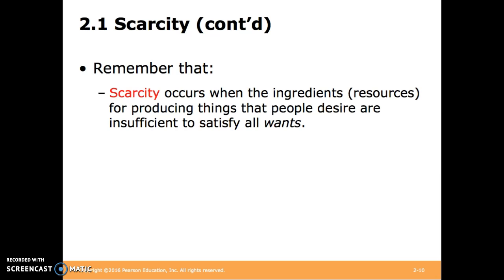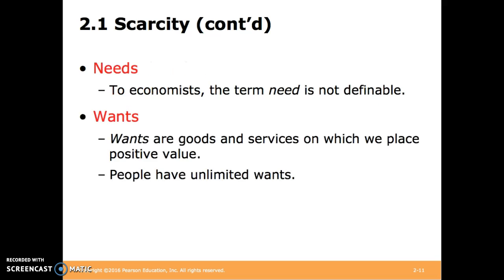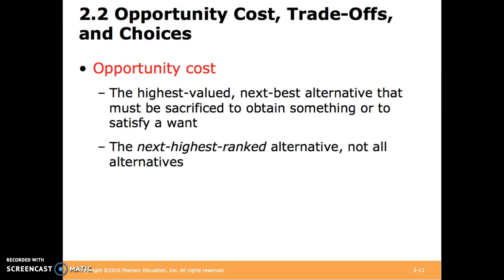Moving forward, it's important to remember that scarcity occurs when the ingredients — resources, or factors of production — for producing things that people desire are insufficient to satisfy all wants. Needs are something that we can't define in economics. However, wants are goods and services on which we place positive value. People have unlimited wants. Opportunity cost is the highest valued, next best alternative that must be sacrificed to obtain something or to satisfy a want.